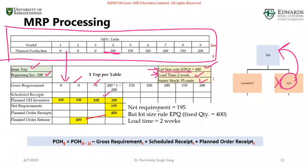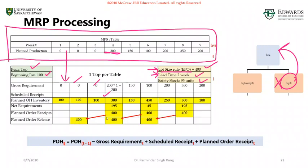To summarize the week four logic: we needed 100 additional units to satisfy demand plus 95 units for safety stock, giving a net requirement of 195. But because we use EPQ, we order a fixed quantity of 400 units. With a two-week lead time, we offset the planned order release to the start of week two in order to receive those 400 units at the start of week four.